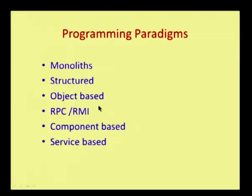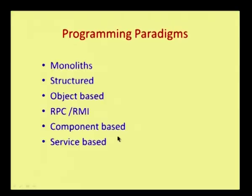Then we have object-based programming — object-oriented languages such as C++, Java, and C#. Then we use RPC (Remote Procedure Call) or RMI (Remote Method Invocation). Whenever you want to use software in a distributed environment, you must be able to invoke a function available on another computer — that is done using RPC or RMI. Then component-based technology evolved, with CORBA and DCOM as the popular component-based technologies.